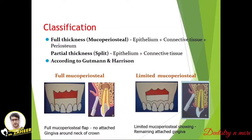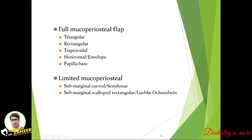Flaps are classified as full thickness (mucoperiosteal) and partial thickness. Full thickness consists of epithelium, connective tissue, and periosteum; partial thickness consists of epithelium and connective tissue with no periosteum. Based on Guttman and Harrison classification: full mucoperiosteal flap has no attached gingiva around the neck of the crown, while limited mucoperiosteal flap still shows remaining attached gingiva. Full mucoperiosteal includes triangular, rectangular, trapezoidal, and horizontal designs; limited mucoperiosteal includes sub-marginal curved or semilunar, sub-marginal scalloped rectangular, and Luebke-Ochsenbein flap.